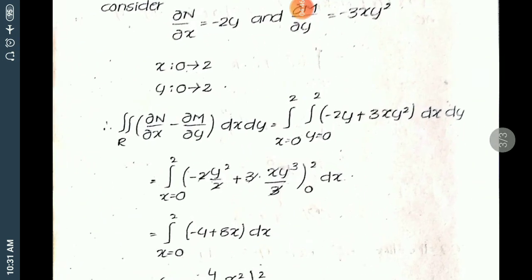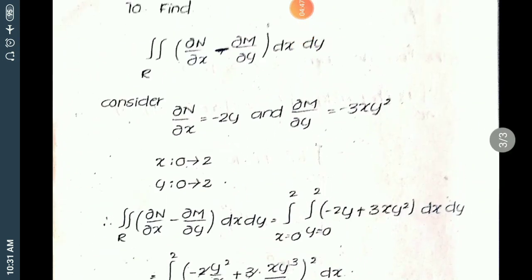Now entering the right side integral of Green's theorem: the double integral over R of (∂N/∂x − ∂M/∂y) dx dy. For the given M and N, ∂N/∂x = −2y and ∂M/∂y = −3xy².